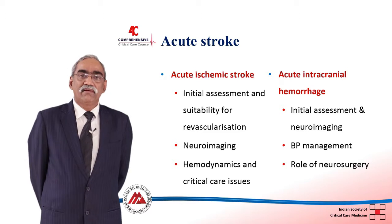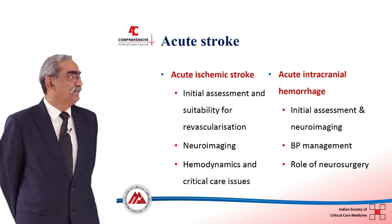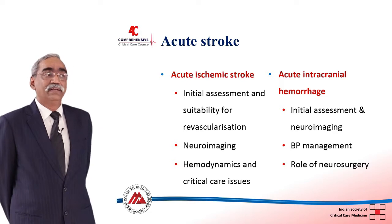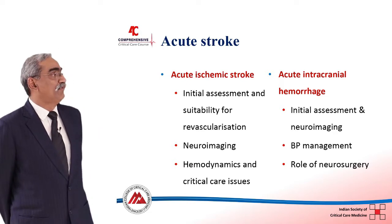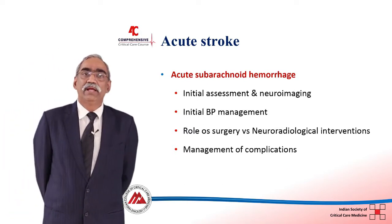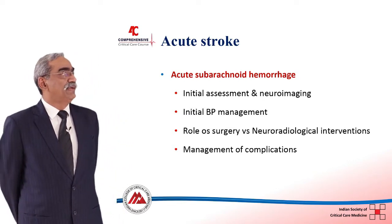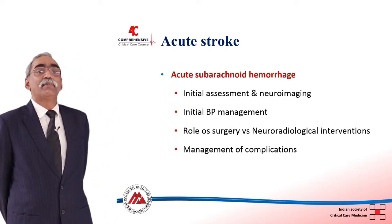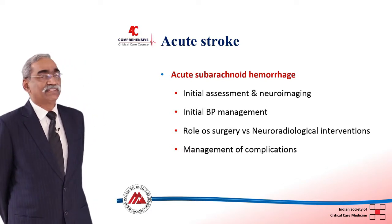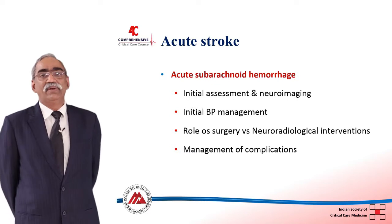Then I am going to cover acute intracranial hemorrhage — the initial assessment and neuroimaging, how to manage the blood pressure and the role of neurosurgery. Finally, I will touch upon acute subarachnoid hemorrhage: the initial assessment and neuroimaging, the initial blood pressure management, the role of surgery versus neuroradiological interventions, and the management of complications.